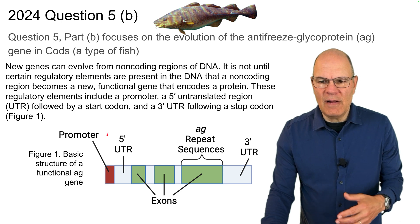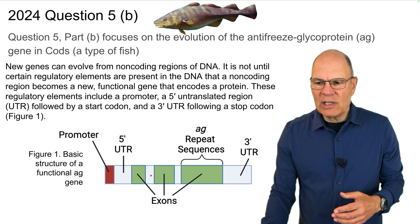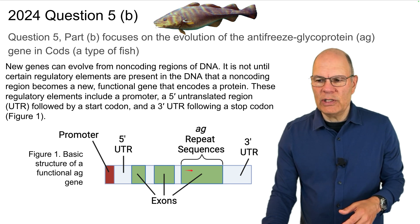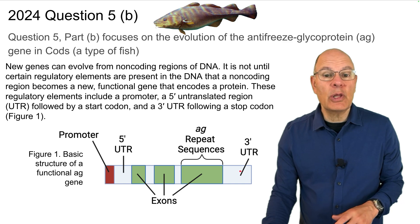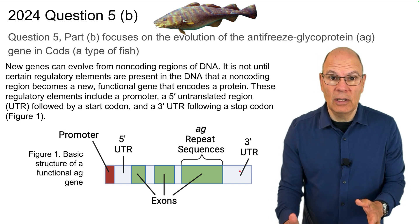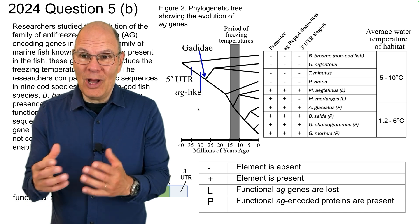This is all shown in figure one. Here's the promoter. Here's that 5' UTR. Here are the exons with some unlabeled introns in between. These are the AG repeat sequences, and here's the 3' UTR. As you can see in your scoring guide, the introduction to question 5, part B, is quite long.